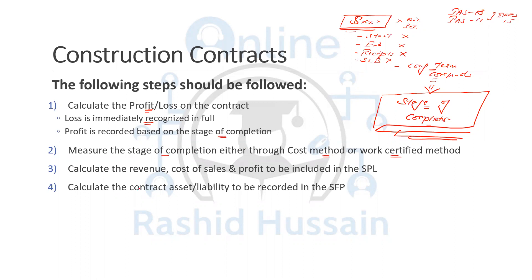The third step is to calculate the extracts of the statement of profit or loss — that means the revenue, the cost of sales, and the profit and losses as well. If it is a loss, then the loss is recognized immediately, which you have already calculated in step number one. The fourth step is to calculate the extracts for the statement of financial position, which means either it is going to be a contract asset or a contract liability.